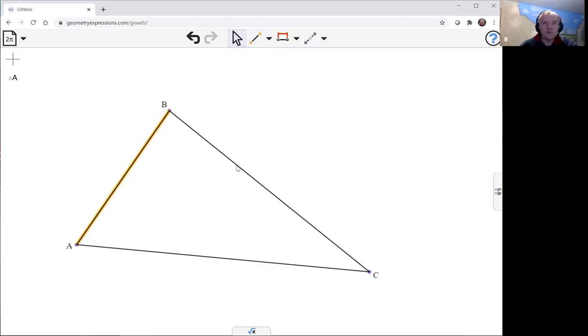So here's my original triangle. To create the incircle you select the three sides and then this circle with three points on it. If I've got three sides selected it'll give me actually the incircle.